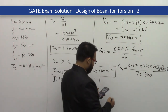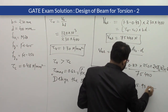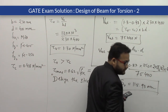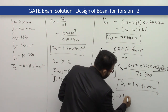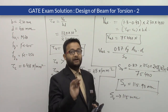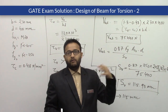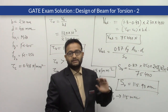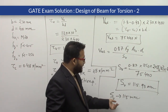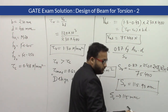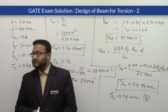Calculating the spacing: Sv = 0.87 × 250 × 2 × (π/4) × 64 × 400 / 75,440 = 115.93 mm. The closest answer we can provide is 115 mm — always provide less spacing while designing. So the answer for Problem 1 is 115 mm, which is option B.